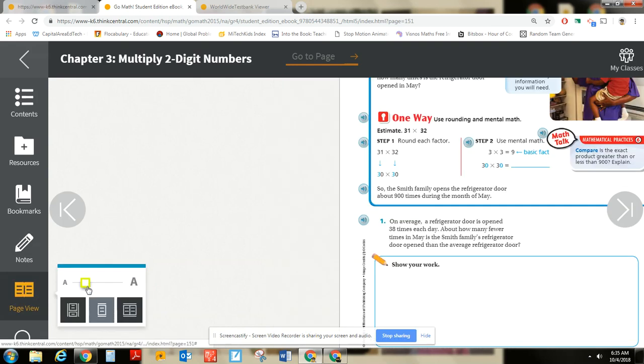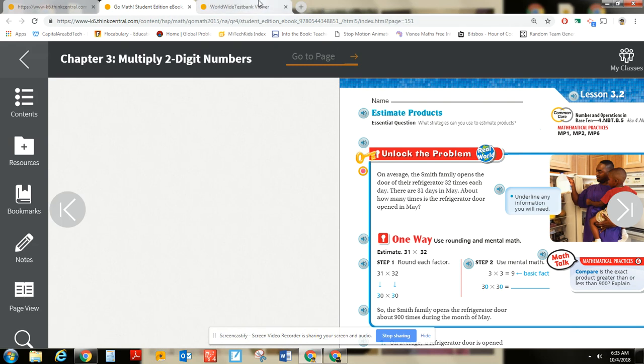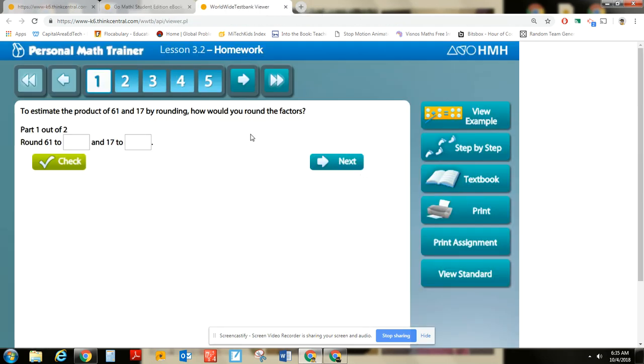I don't think this lesson is going to be super complicated for us. We've really been working hard on estimating numbers and using our knowledge of place value to rename numbers. So let's just get into it. All right. This first problem says to estimate the product of 61 and 17 by rounding. How would you round the factors? And you can see that there's another step.